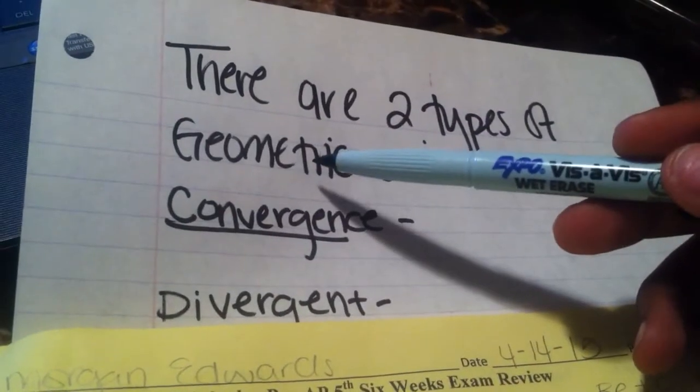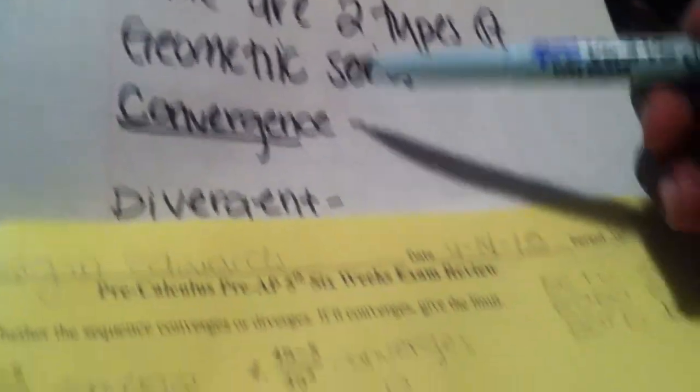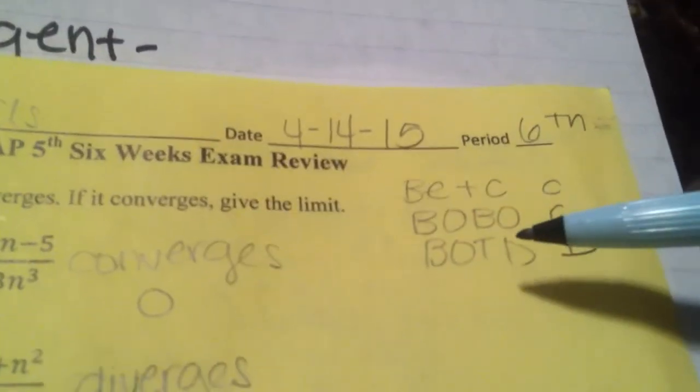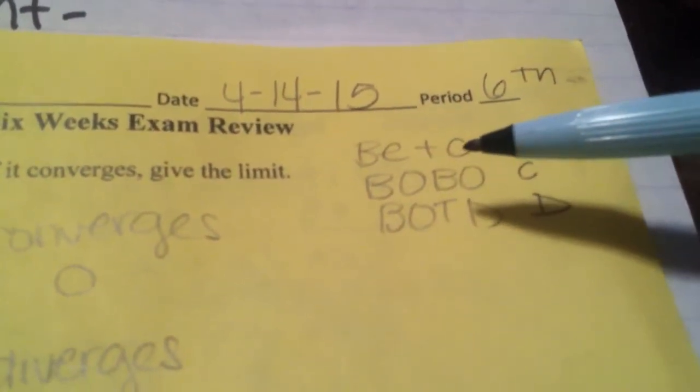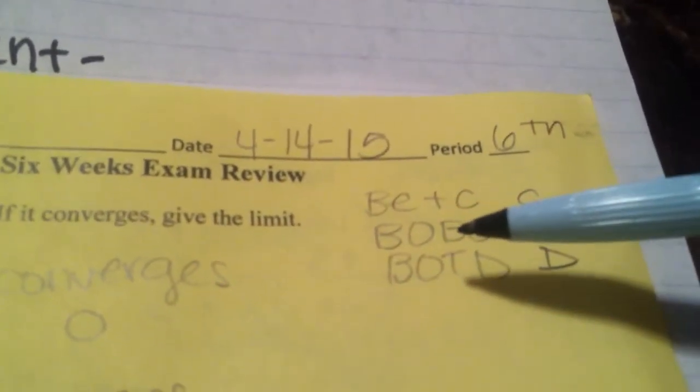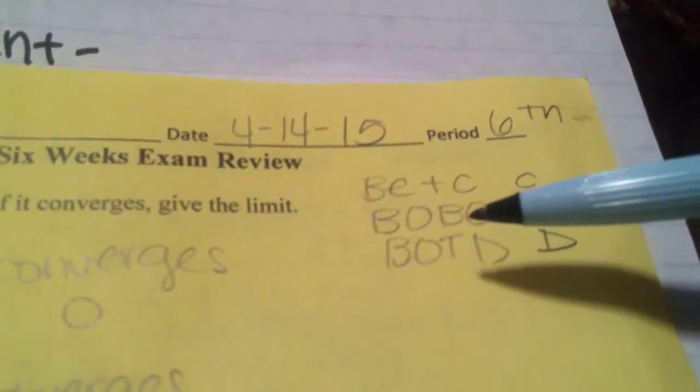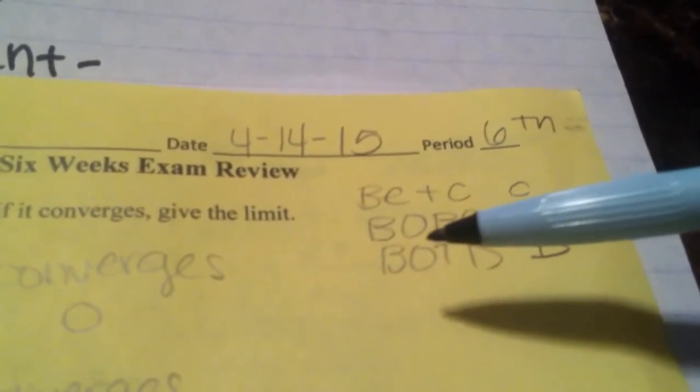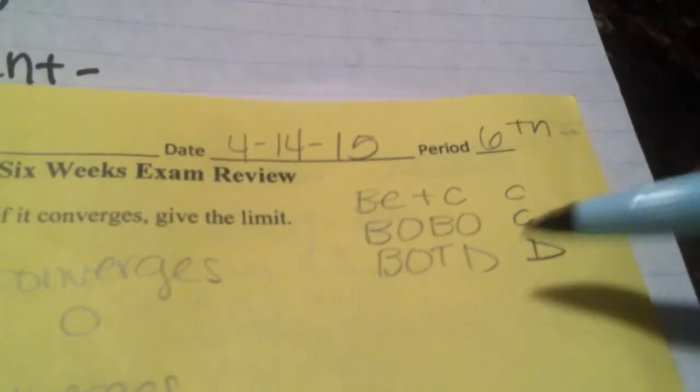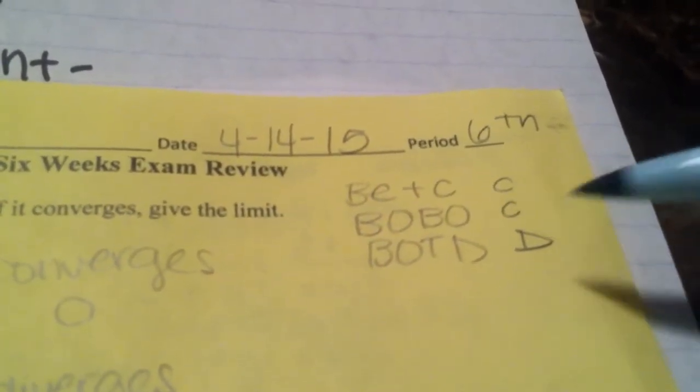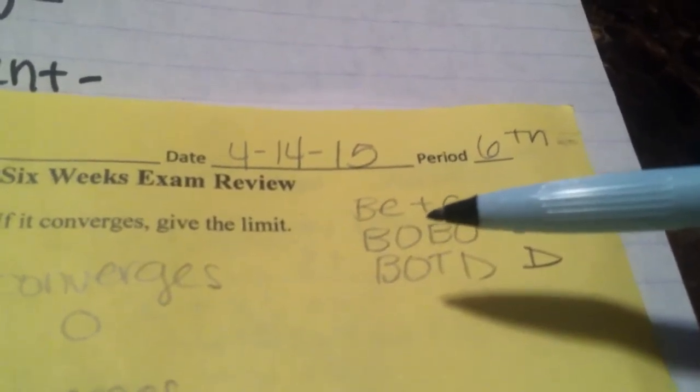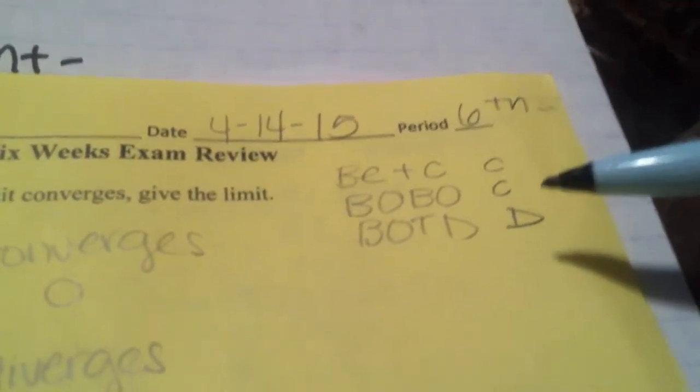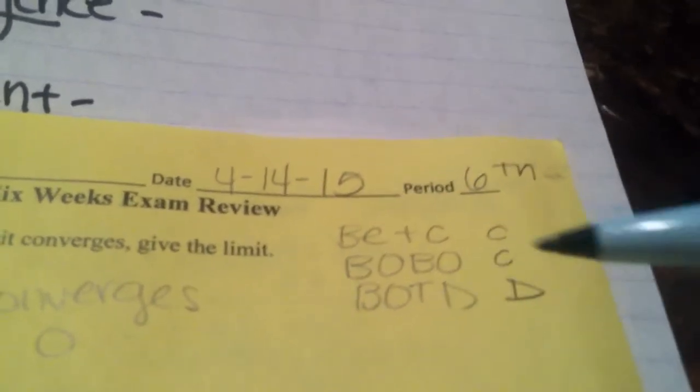Now, to figure out which geometric series these are, you have to use Betsy Bobo Boatsy D. Looking at the degrees, if the bottom equals the top, then it's the coefficient. If the bottom is bigger on top, then it's zero. If it's bigger on top, then it doesn't exist. I have these C's and this D right here because if the bottom equals the top, it is convergence. If it's bigger on bottom, then it is also convergence. However, if it is bigger on the top, then it is divergence.